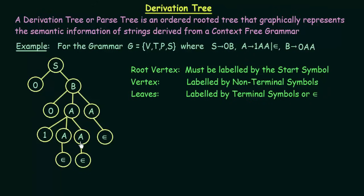Wherever you see A and B, those are the vertices. Then we have the leaves — they are labeled by the terminal symbols or by epsilon. The leaves are the ending nodes or ending vertices, meaning those vertices which do not have any more children. Here we see that some vertices are labeled by zero, some by one, and three are labeled by epsilon. This is how we label the different vertices in a derivation tree.